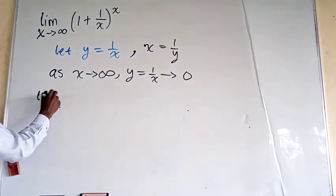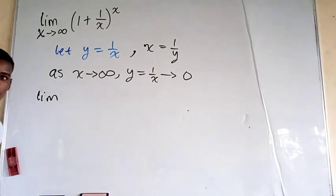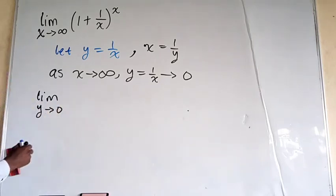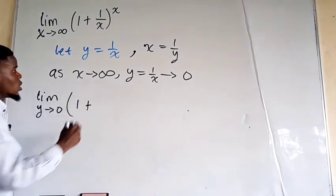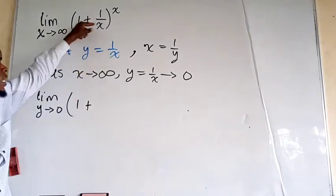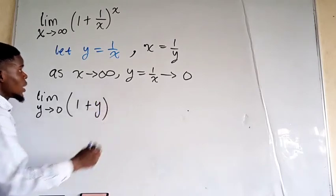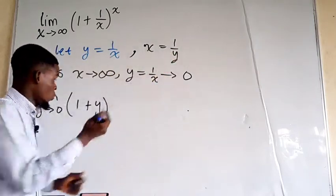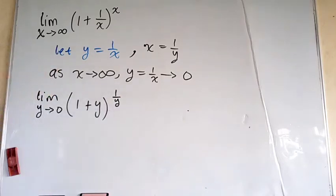We're going to have the limit now as x tends to infinity — and as I said, y tends to zero — so we put down: the limit as y tends to zero of (1 + y) raised to the power 1 over y.